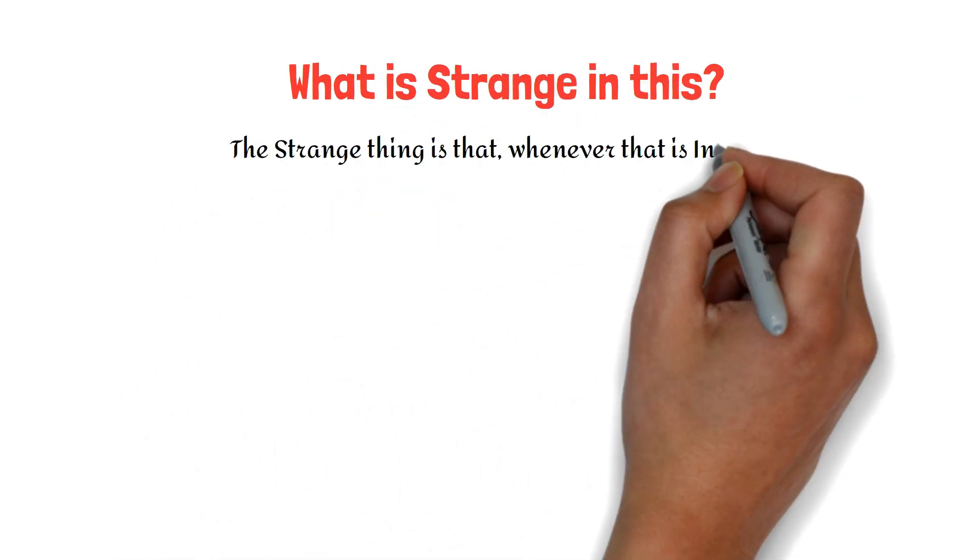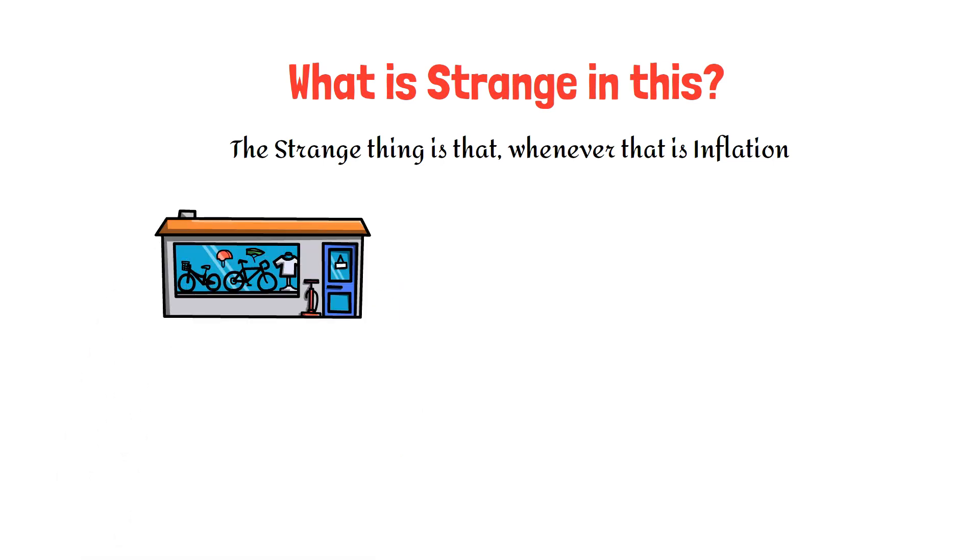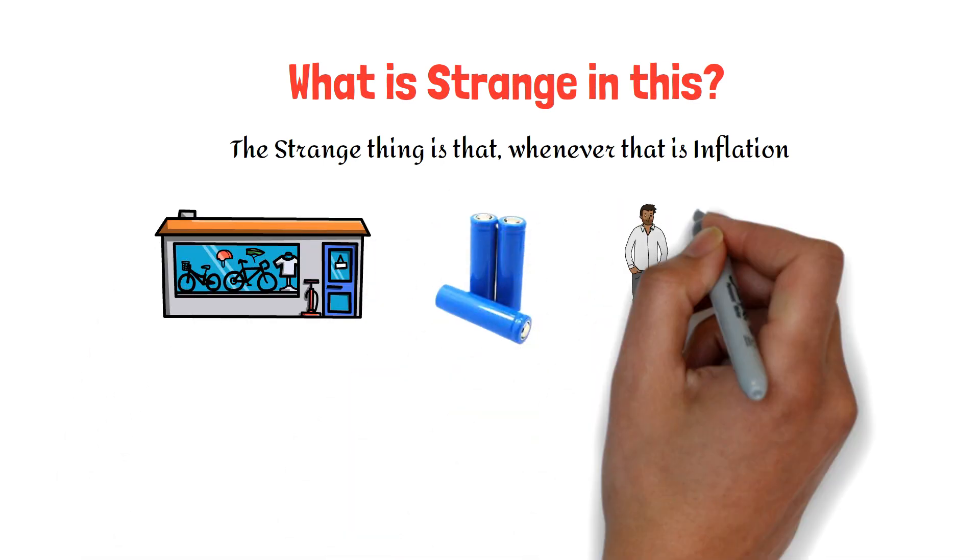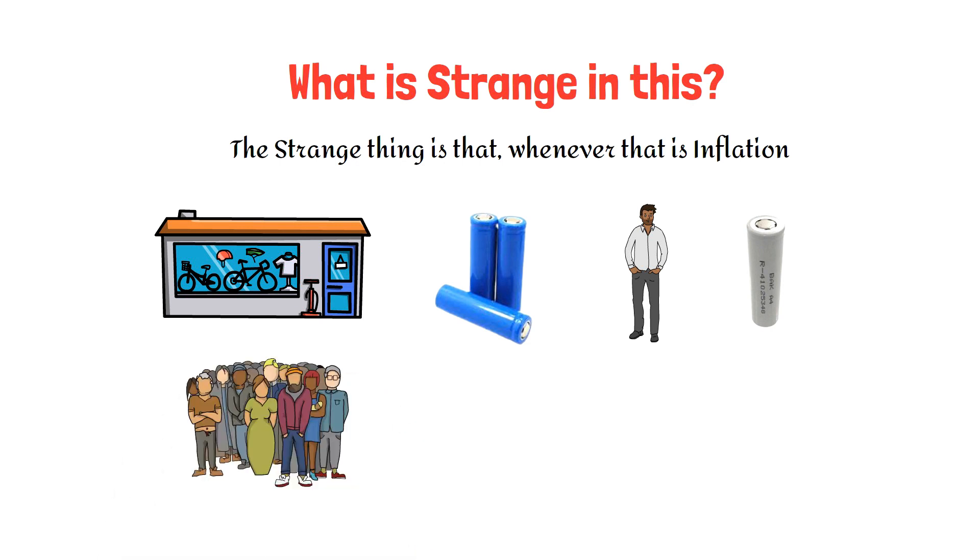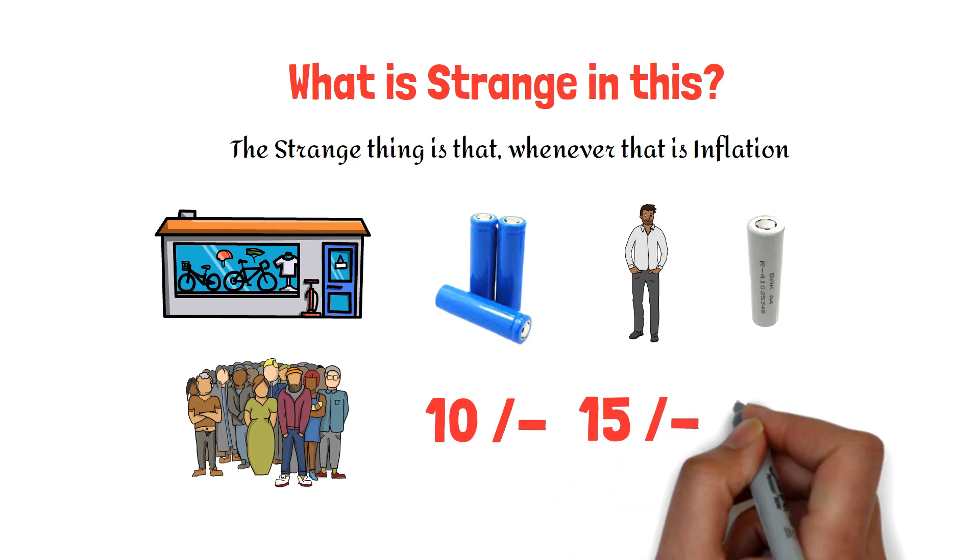The strange thing is that whenever there is inflation, suppose you take a product like a battery cell. You go to a shop for buying a battery cell, but the shopkeeper is having only one battery cell. Two more people come. You say the price is 10 rupees, another one says I will give 15, another one says I will give you 18.